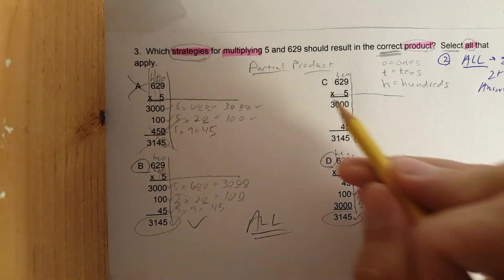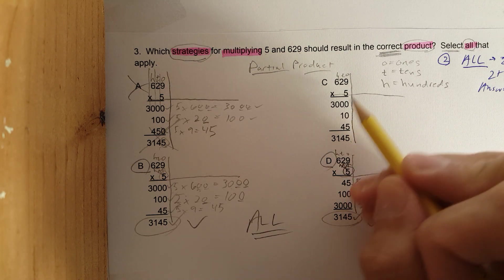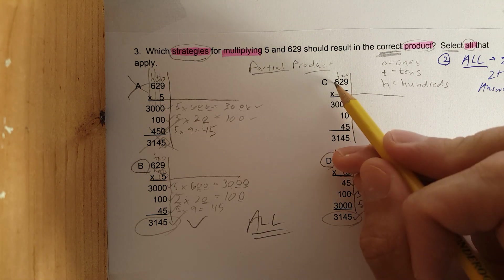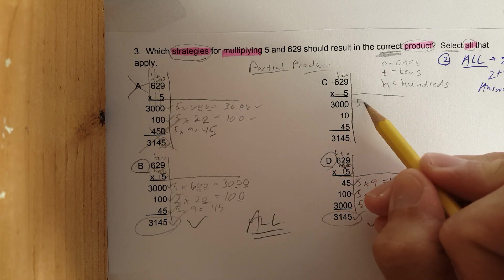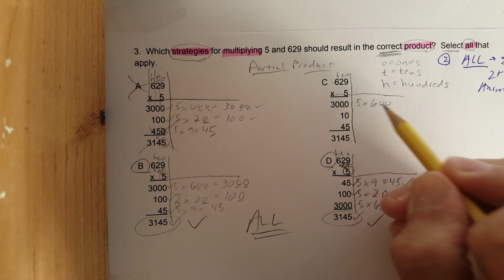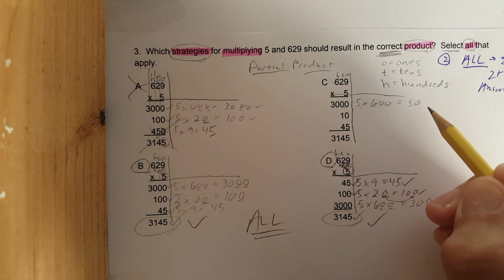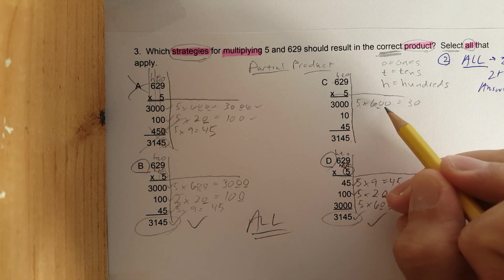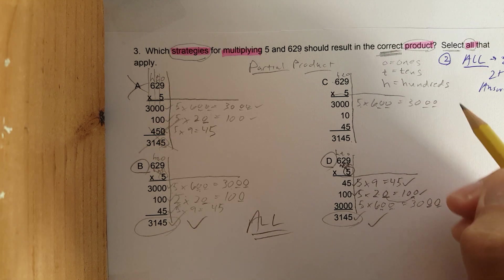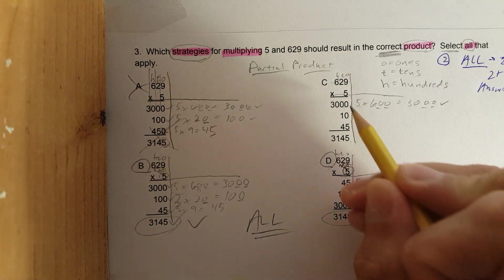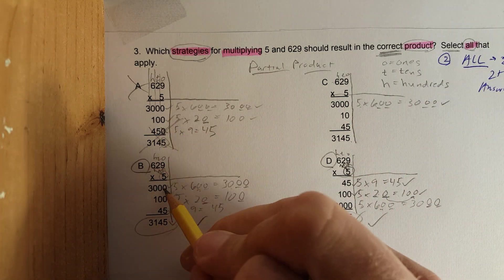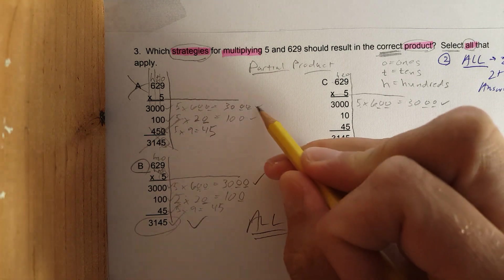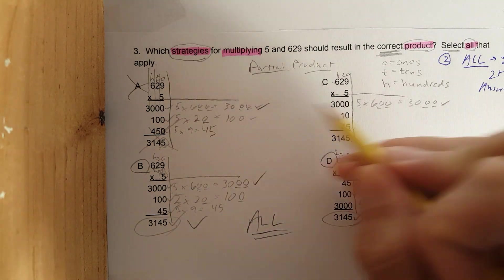Let's go to problem C. Again, they're going backwards on partial product, starting with the hundreds place first. Let's check it out: 5 times 600. 5 times 6 is 30 - please master your multiplication facts as fast as possible. I add two zeros.